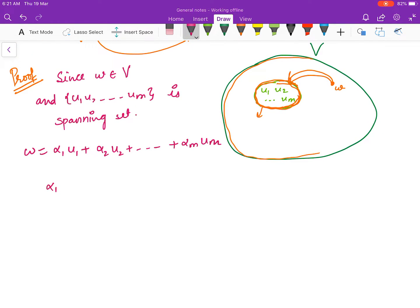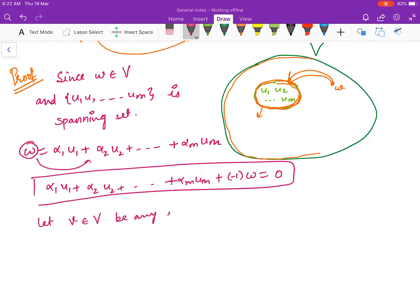I can write it as α1·u1 + α2·u2 + ... + αm·um. I can bring w on this side so I have -1·w + α1·u1 + α2·u2 + ... + αm·um = 0. Now let v ∈ V be any element. Because v is in V, you can write v as a linear combination of the elements of this set, u1, u2, ..., um. Now the constants will change.